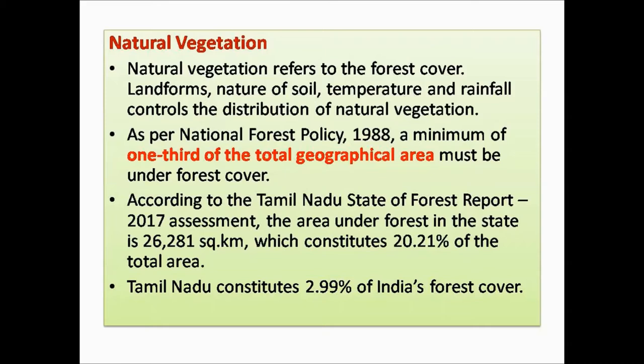As per the National Forest Policy 1988, a minimum of one third of the total geographical area must be under forest cover. For example, in Tamil Nadu, one third — about 33% — of the state must be forest. But according to the Tamil Nadu State of Forest Report 2017, the total forest cover of Tamil Nadu is 26,281 sq. km, which is only about 20.21% of the total area.